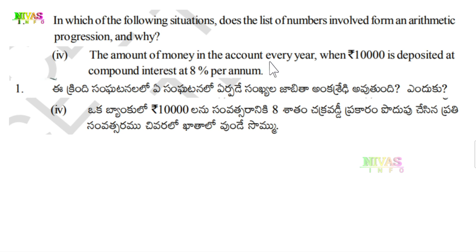The amount of money in the account every year when 10,000 rupees is deposited at compound interest at 8% per annum. With compound interest, the principal amount increases every year. Let's check if this situation involves arithmetic progression.